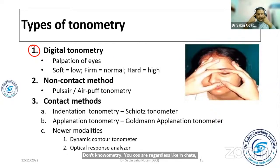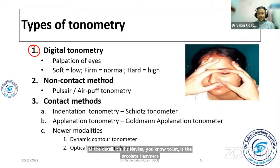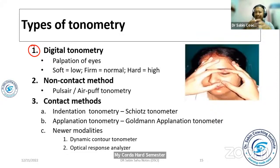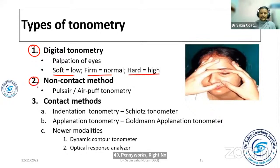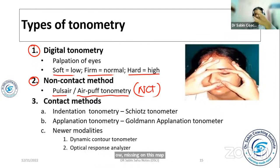Digital tonometry uses the index finger to palpate and estimate IOP. Non-contact methods include air puff tonometry, where a puff of air is directed at the cornea to measure pressure, displayed on a screen or console.